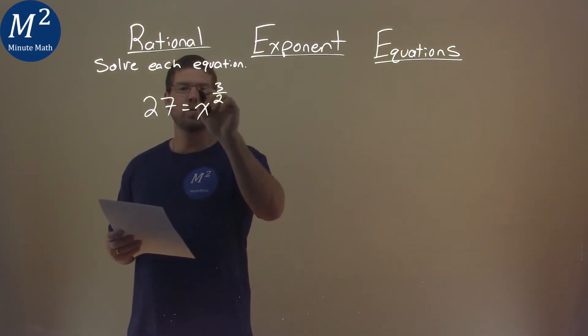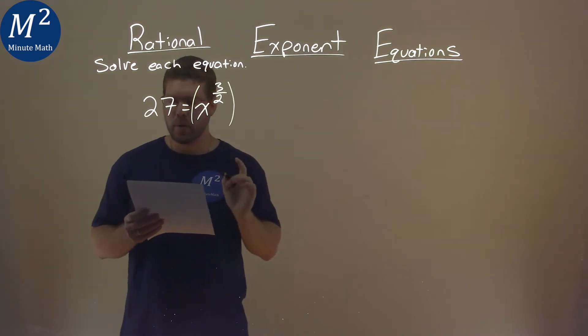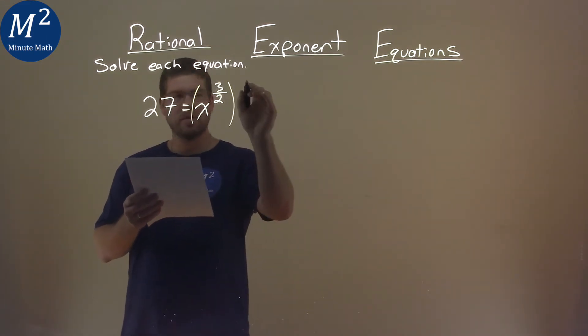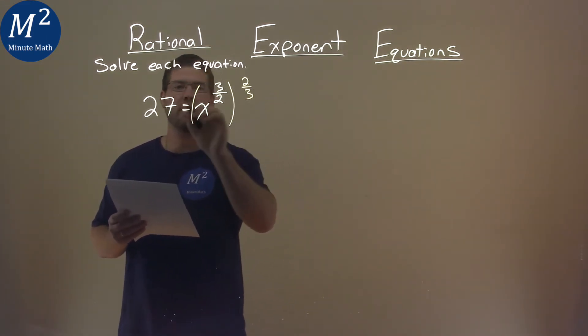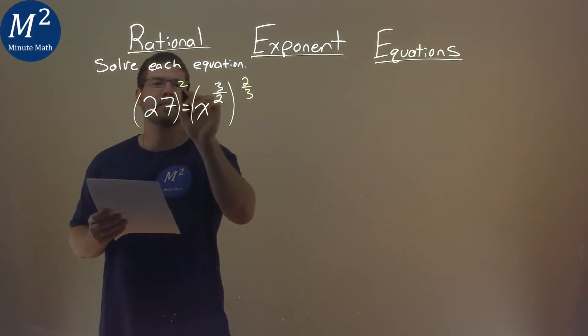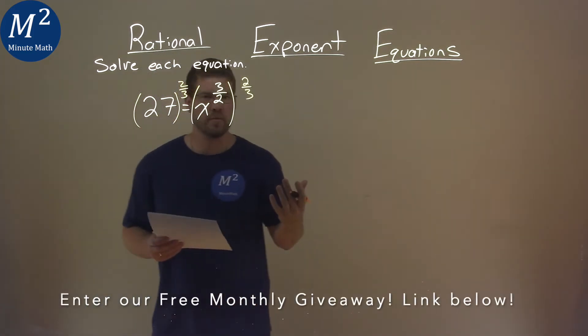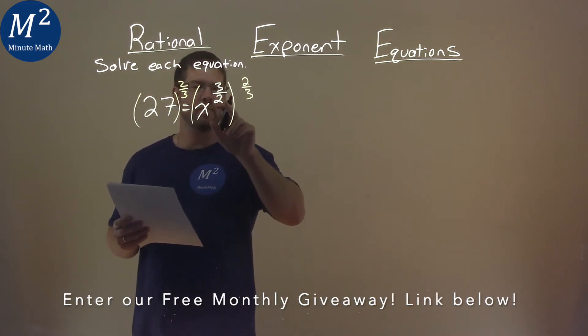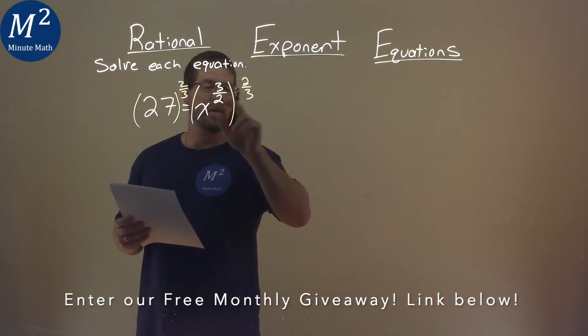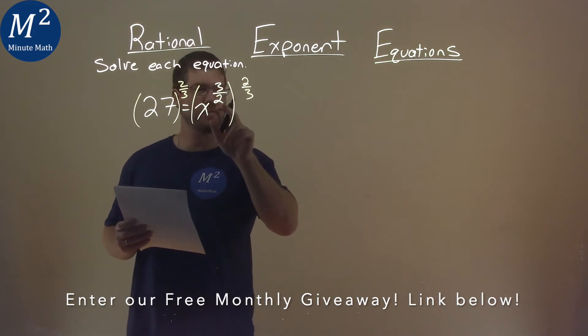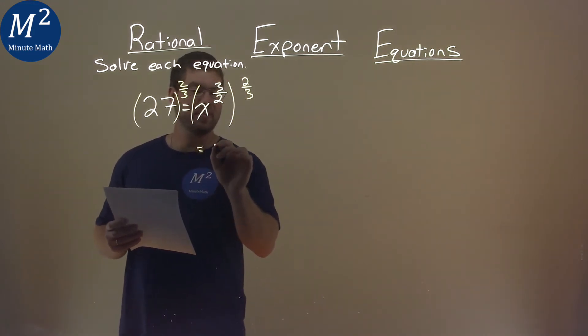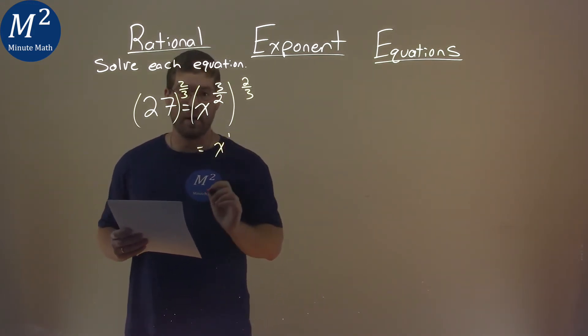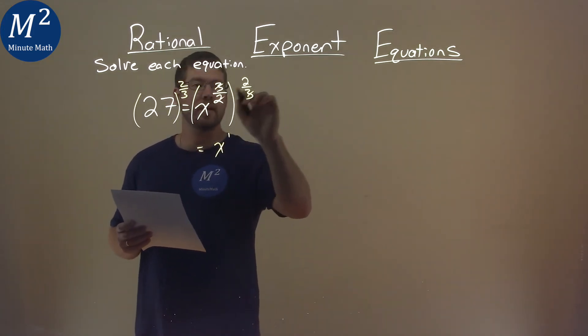So I'm going to use my rules here, and I'm going to take both sides and raise them to the 2 thirds power. So what does that do? Well, we know our rules of exponents here state that when we have something raised to another exponent, we multiply the exponents, and 3 halves times 2 thirds is just x to the first power, right?